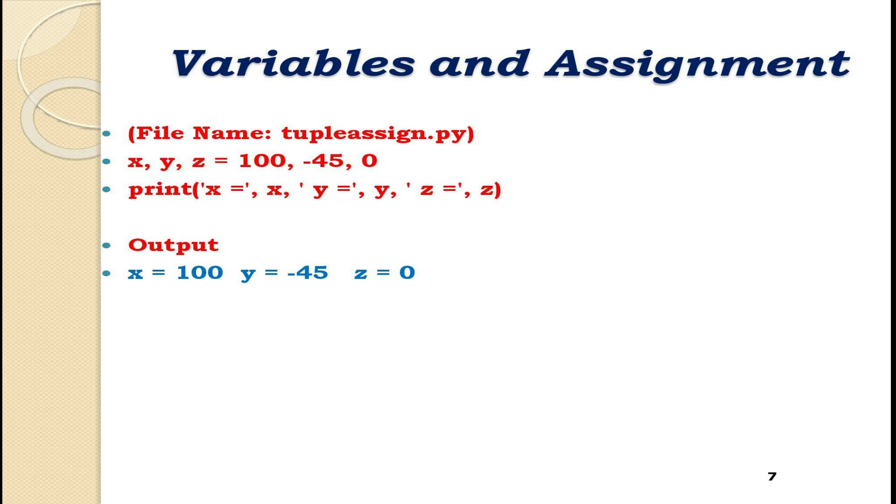Here, in the assignment statement, x, y, z = 100, -45, 0. x, y, z is one tuple and 100, -45, 0 is another tuple. Tuple assignment works as follows: The first variable in the tuple on the left side of the assignment operator is assigned the value of the first expression in the tuple on the right side, effectively x = 100. Similarly, the second variable in the tuple on the left side is assigned the value of the second expression in the tuple on the right side, effectively y = -45, and z gets the value 0.